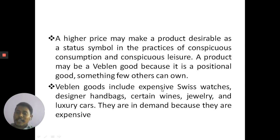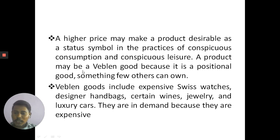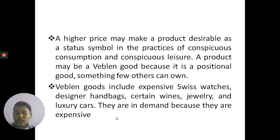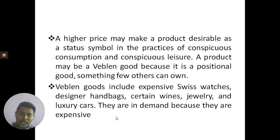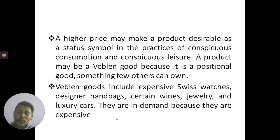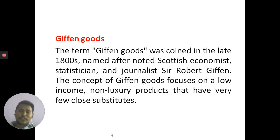A higher price may make a product a status symbol in the practice of conspicuous consumption, and a product may be a Veblen good because it is a positional good — something few others can own. Veblen goods include expensive Swiss watches, designer handbags, certain wines, jewellery, and luxurious cars. People buy these luxurious items irrespective of price because they want to show their prestige.